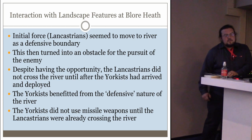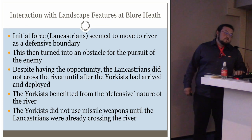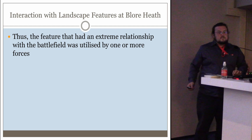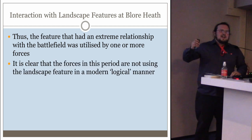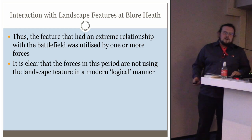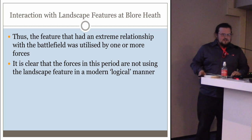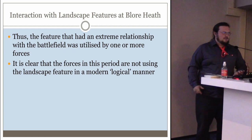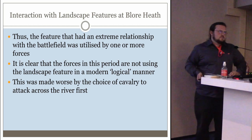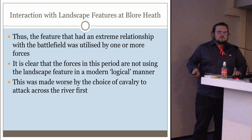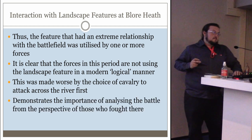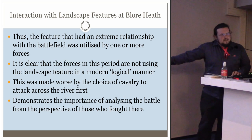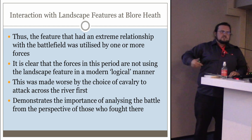The Yorkists didn't bother using any missile weapons — and we know they had access to primitive artillery and arrows — until the Lancastrians were already crossing the river. So we can definitely say this feature had an extreme relationship with the battlefield and was utilized by one or more forces. However, the means by which it was utilized — I would say — is not necessarily logical. There is nothing in all the research I've seen to suggest that one would arrive at a battlefield, place yourself on the other side of a river, and then have to jump over it to chase your enemy. This was made partially worse by the Lancastrians insisting on using cavalry to attack across the river first. Having visited the site, cavalry would not like that river. It demonstrates the importance of analyzing the battle from the perspective of those who fought there — there must have been a reason this seemed like the right idea at the time, or perhaps no one thought about the river as an obstacle at all.